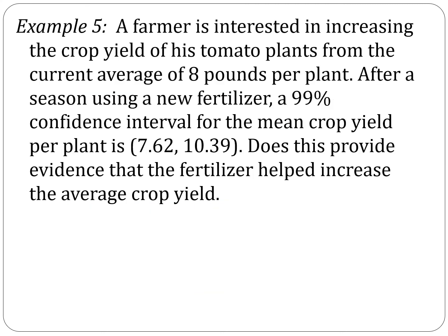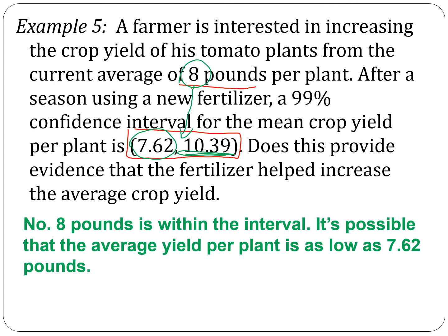Two more questions to make sure we're clear on what we're actually finding when we create a confidence interval. A farmer is interested in increasing the crop yield of his tomato plants from the current average of eight pounds per plant using a new fertilizer. A 99% confidence interval for the mean crop yield per plant is 7.62 to 10.39. Does this provide evidence that the fertilizer has helped increase the average crop yield? Eight is within those two numbers, meaning it's possible the average yield is only 7.62 — in which case the fertilizer actually made it worse. We really don't know, so there's not sufficient evidence that this has made it better. Eight pounds is within the interval.